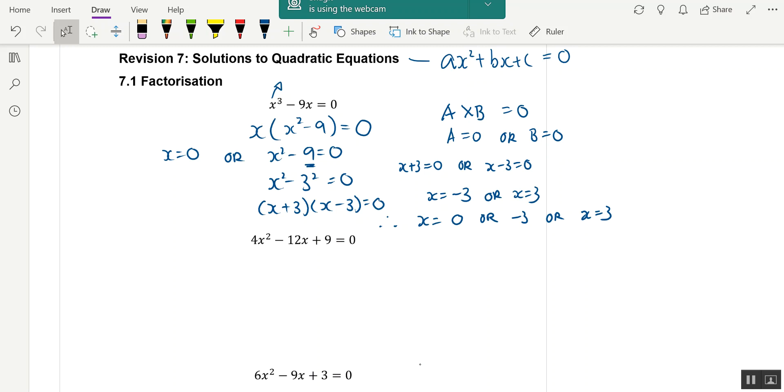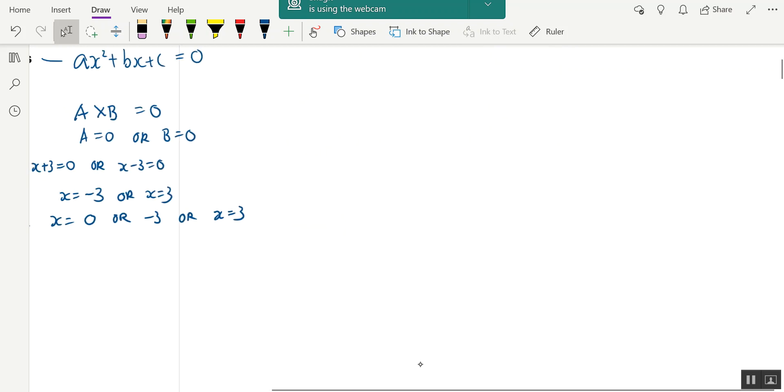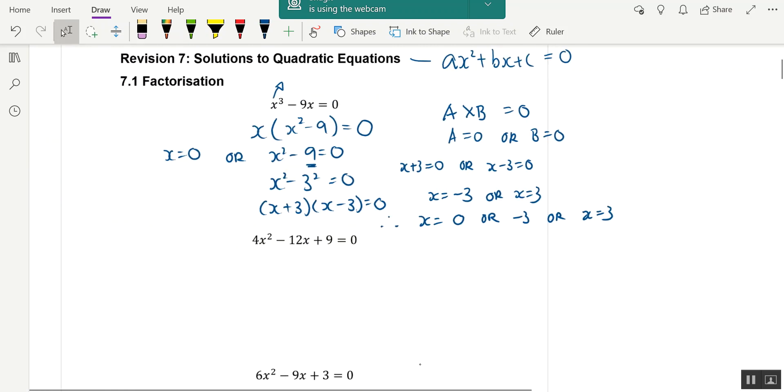Then sometimes, or in fact most of the time, you have to be very sensitive to square numbers. For example, 4x² and 9. 4x² is 2x the whole thing squared. 9 is 3 squared.